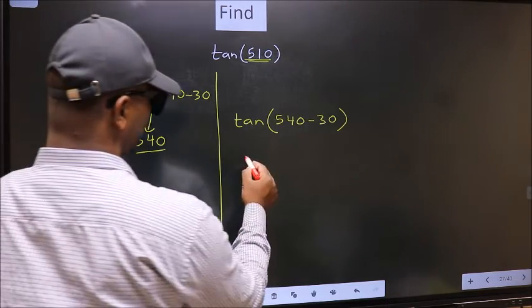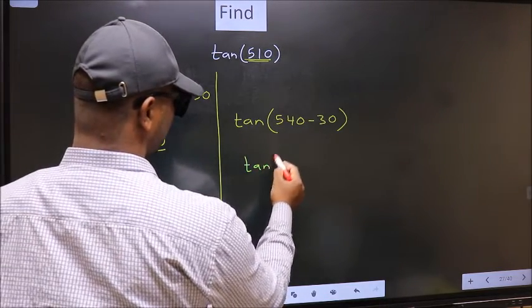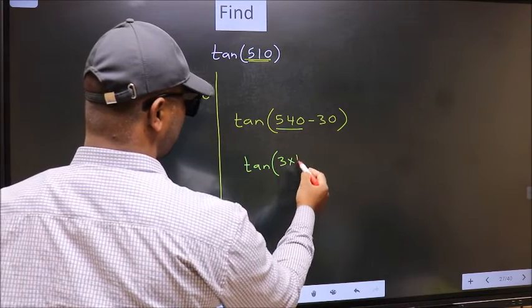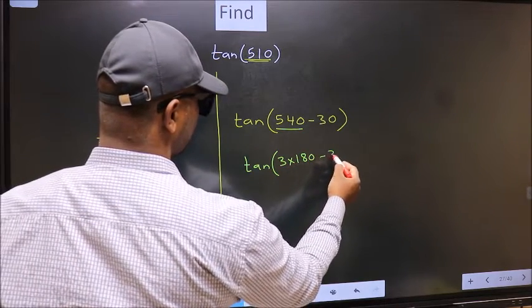Next, tan in place of 540, now we should write 3 × 180 minus 30.